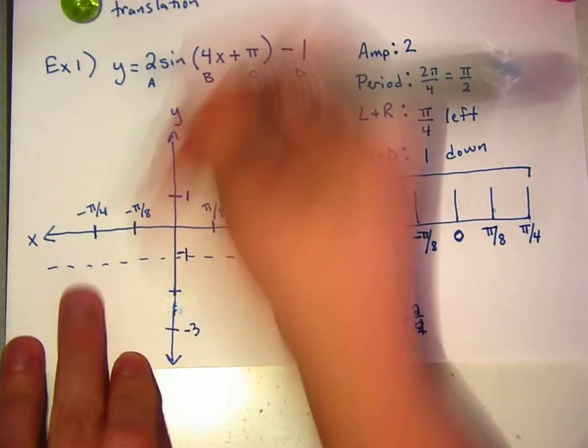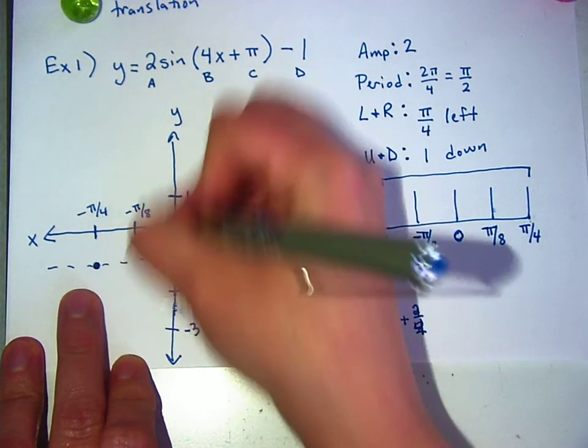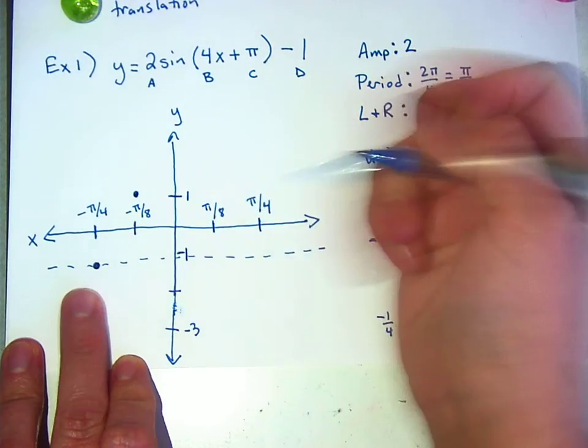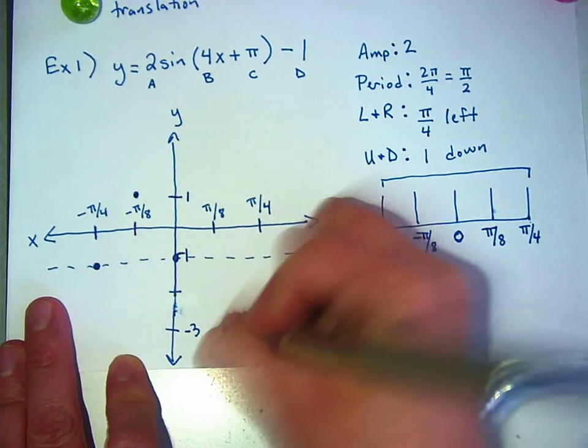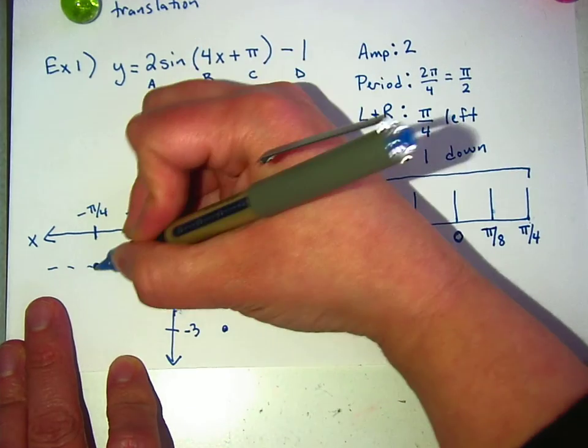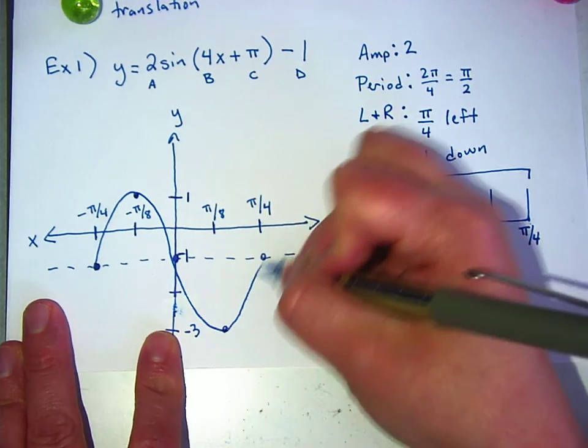Okay, and this one isn't negative, so I'm going to start at the center. I'm going to go up to 1, back down to the center, down to negative 3, and then back to the center. So it goes up and down and up.